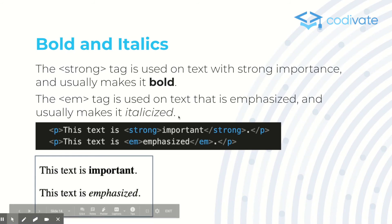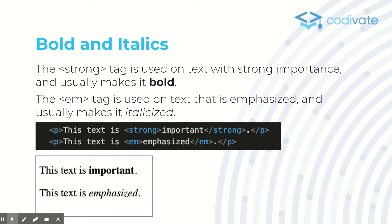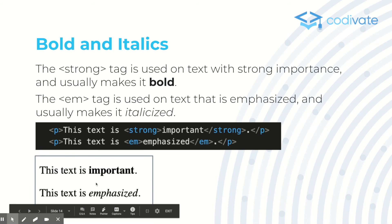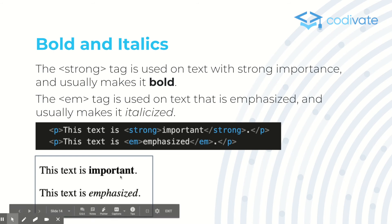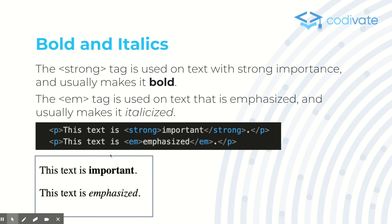Bold and italics: to make text bold, use the strong tag, which denotes that something has strong importance. The em tag is used on text that is emphasized and usually makes it italicized. Using the em tag changes the font style to italics, while the strong tag changes the font weight to bold. Don't worry about making something super bold or less bold for now — changing font weight is for CSS.